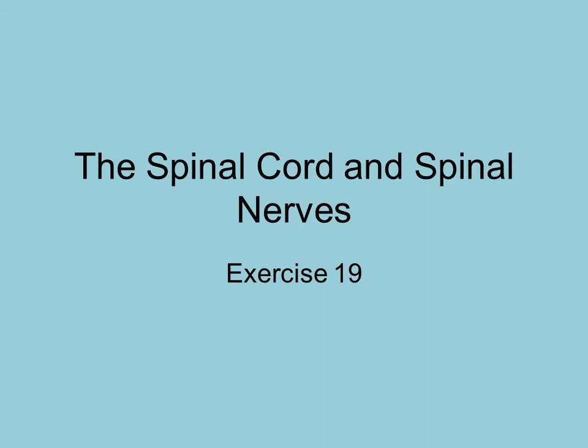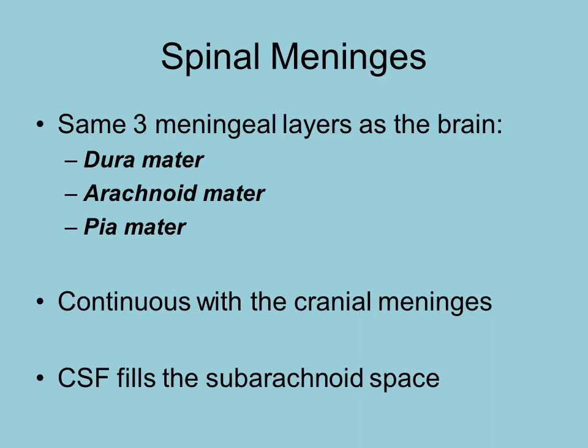This is exercise 19 and it deals with the spinal cord as well as the spinal nerves. We look first at the spinal cord and the layers surrounding it that help protect it. These are the spinal meninges — the same layers as the cranial meninges. There are three layers: the dura mater, arachnoid mater, and the pia mater. They are continuous with the cranial meninges, and cerebral spinal fluid fills the subarachnoid space.